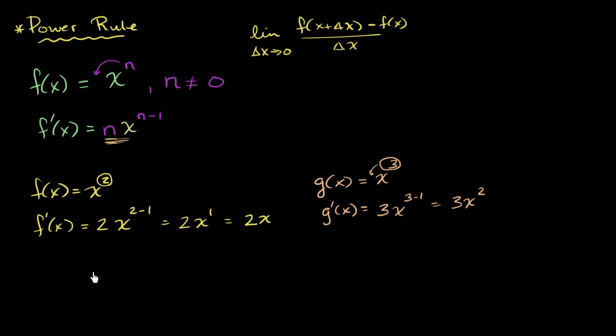We could have a scenario where maybe we have h of x. h of x is equal to x to the negative 100 power. The power rule tells us that h prime of x would be equal to what? Well, n is negative 100, so it's negative 100x to the negative 100 minus 1, which is equal to negative 100x to the negative 101.